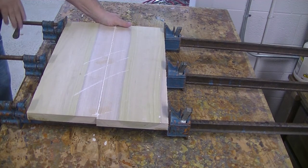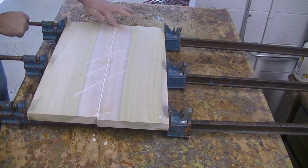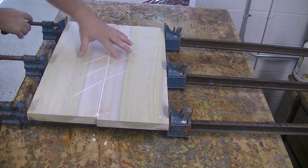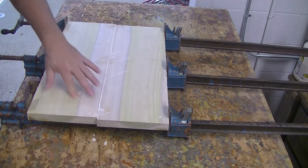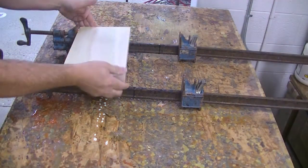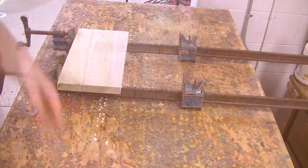Start tightening each clamp equally, making sure that your surface is even. Complete the same process for the face of the clock, but just use two clamps.